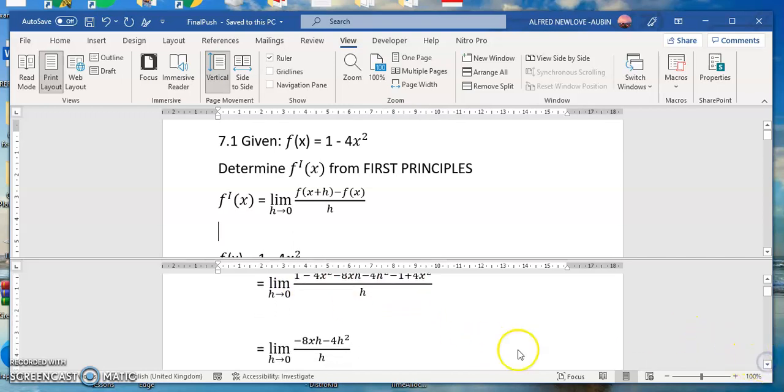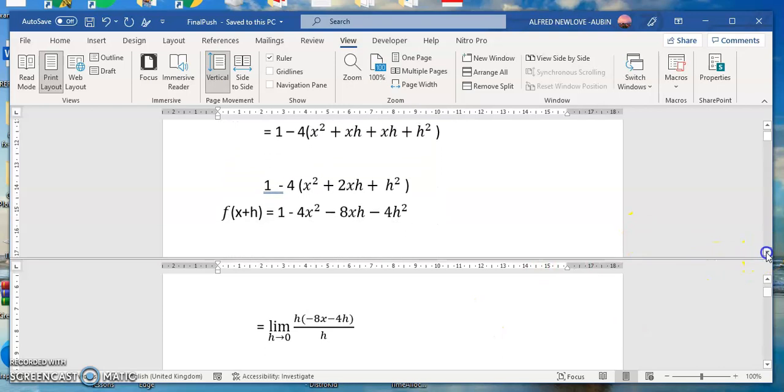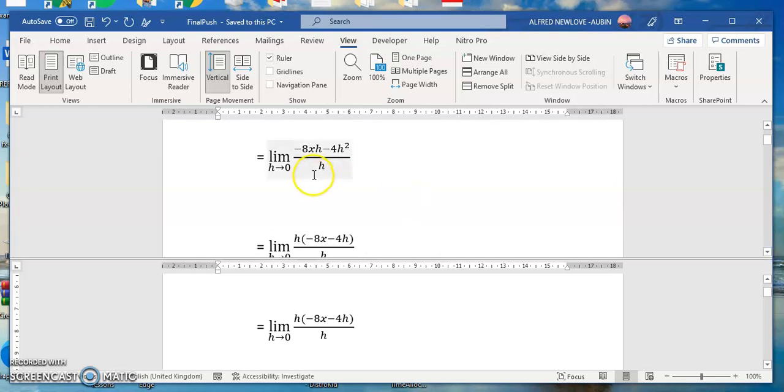Then we are going to have -8xh plus... for h squared, then if you take the limit as it approaches zero, h will become zero. We can factorize h out, that's one way we can bring h out as a factor. Then you have -8x minus 4h, then the h will cancel that one.